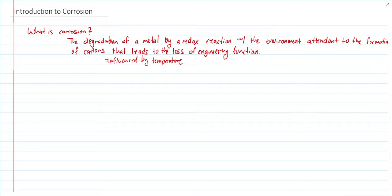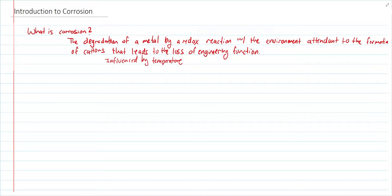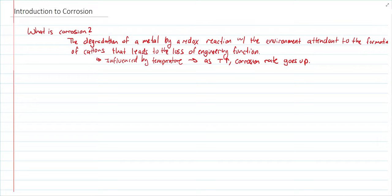What influences corrosion? Temperature — as temperature goes up, corrosion rate goes up. We'll discuss that in later lectures, but for now just keep that in mind. Cations are the metals that oxidize.